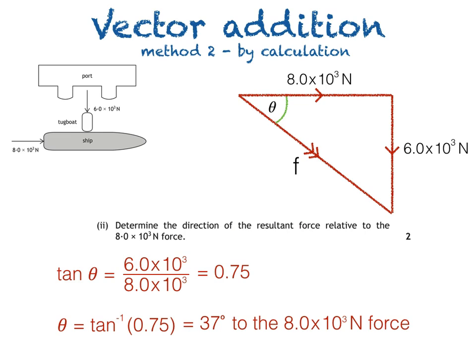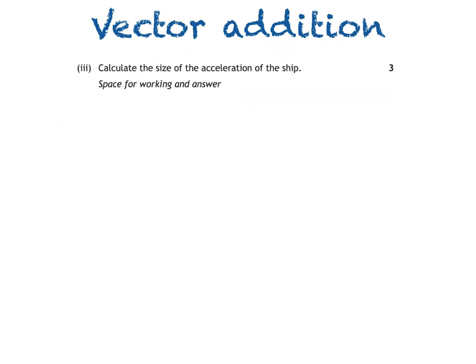Part 3 asks us to calculate the size of the acceleration of the ship. So we use this equation: F = ma, where F is the resultant force of 1.0 × 10⁴ N, m is the mass of the ship, which was stated earlier in the question, 5.0 × 10⁶ kg, and a is the acceleration we're trying to calculate.